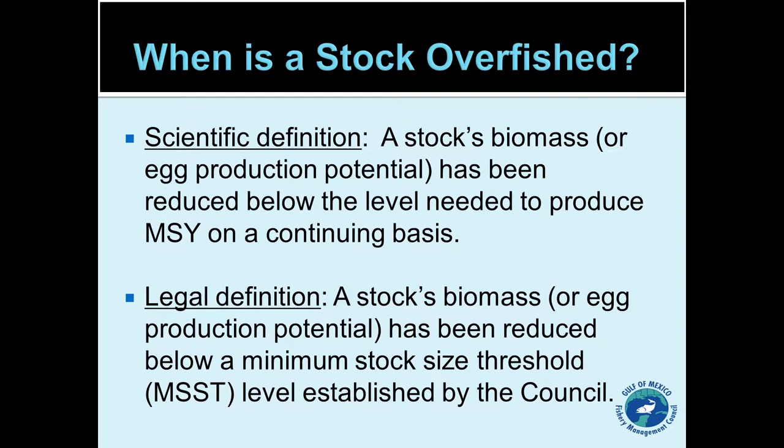Since we talked about whether a stock is overfished, what do we mean by that? The term 'overfished' actually has several different meanings. There are two definitions we're going to be concerned with here. The general scientific definition is that a stock's biomass, spawning stock biomass, or its egg production potential has been reduced below whatever level is needed to produce maximum sustainable yield on a continuing basis. From a biological condition, the stock is considered overfished.